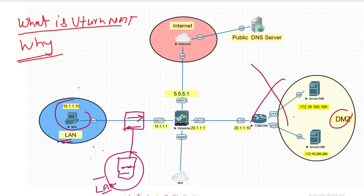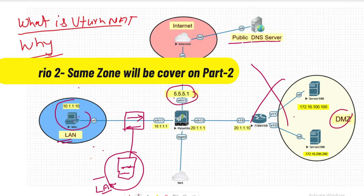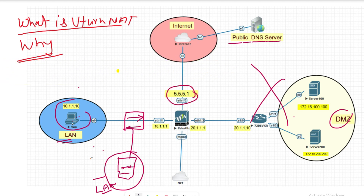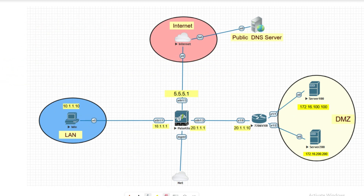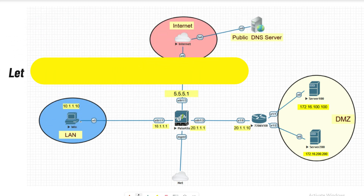In the second scenario, the source machine and server are in the same LAN zone. The domain name will still be resolved from the public DNS server to the public IP address. We'll look at how the traffic flow works in that case in the next video.